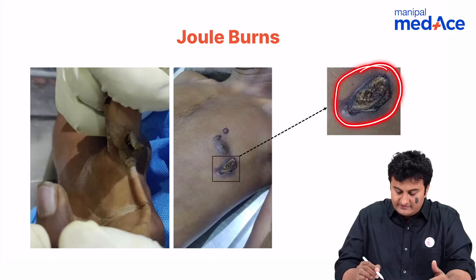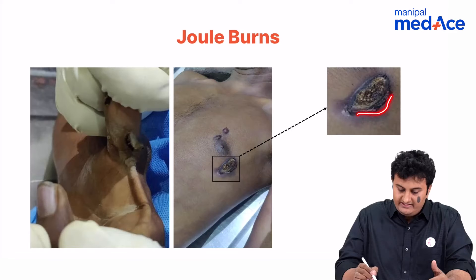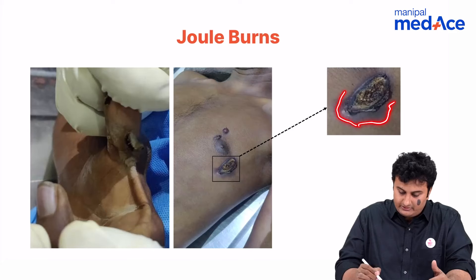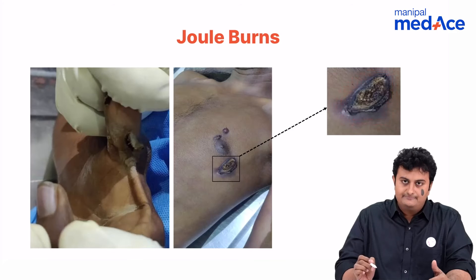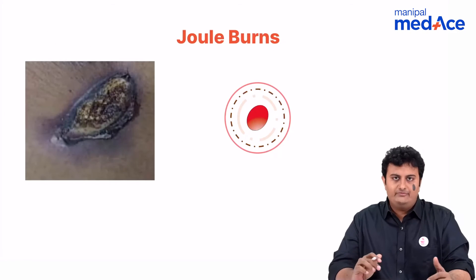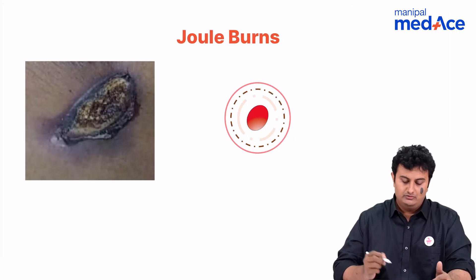I want you to look at this and take a moment. Notice how there is a pale center, there is a raised margin, and a surrounding area of hyperemia — you are able to see it here, a little bit of redness surrounding the area. Let us blow it up so it is a little bit easier for you to note.